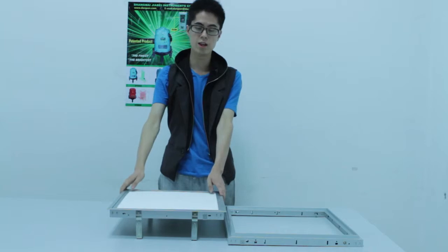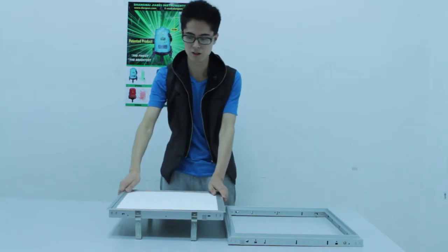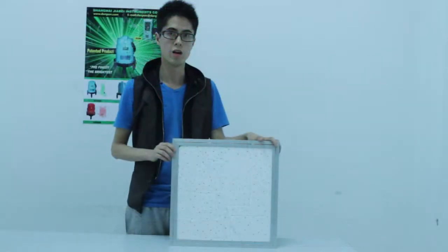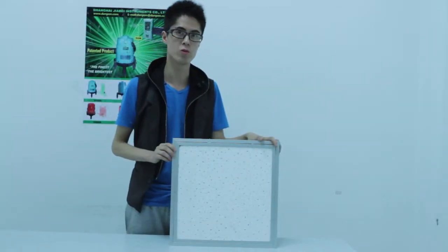The ceiling access panel can be divided into two groups, the exposed ceiling and the concealed ceiling. Now let me introduce how it works.